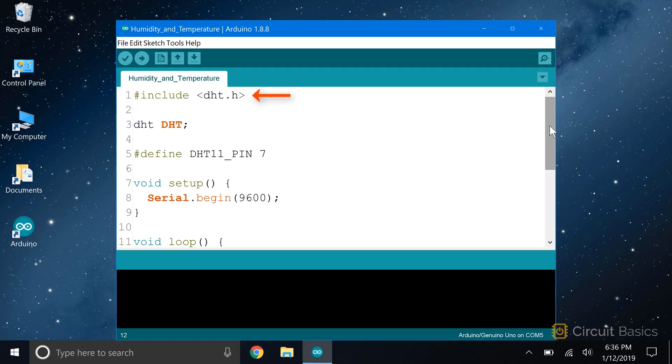We include the DHTlib library with hash include and DHT.h inside the angle brackets. Now we create a DHT object from the DHT class. Next, we define the pin number that the DHT11 sensor pin is connected to. You may not have seen a pin declared this way before. This isn't the recommended way to do it, but I want to show it to you because it does come up from time to time. HashDefine lets you store a constant value without using up any program memory. In this case, it's a pin number.